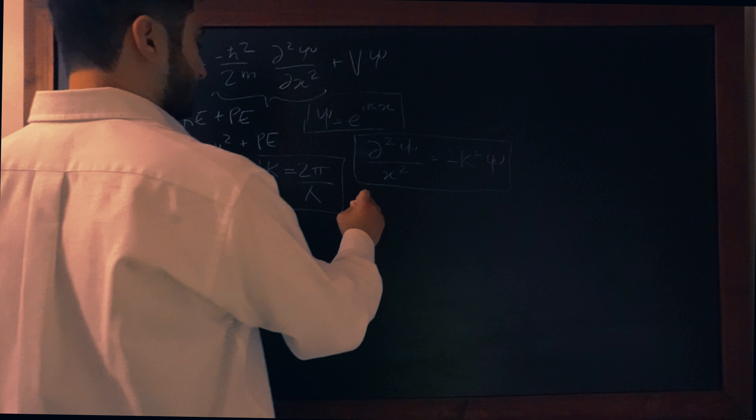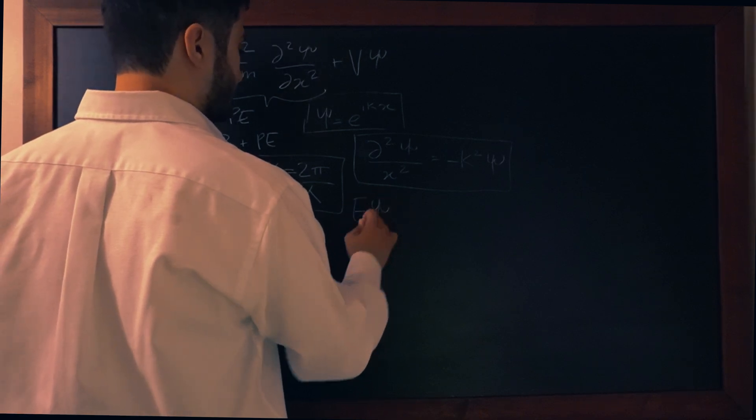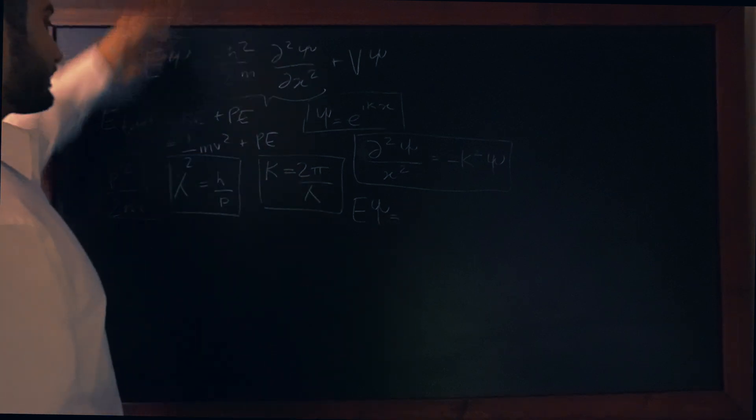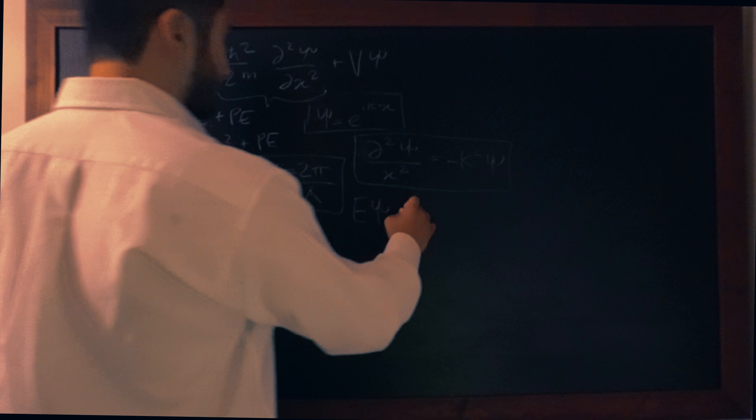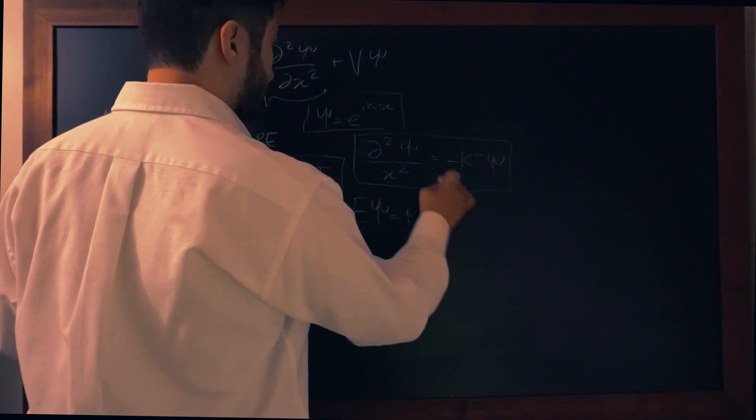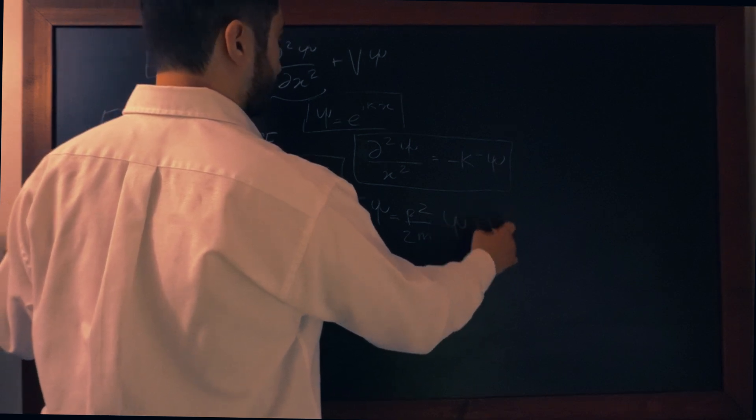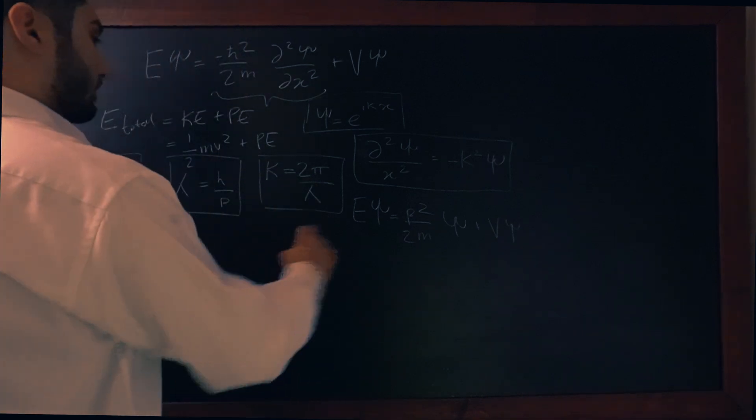We could write this simply as Eψ. The total energy of our particle is equal to the kinetic which is the p squared over 2m. So we can write p squared over 2m·ψ plus the potential·ψ. So that's what we end up with.